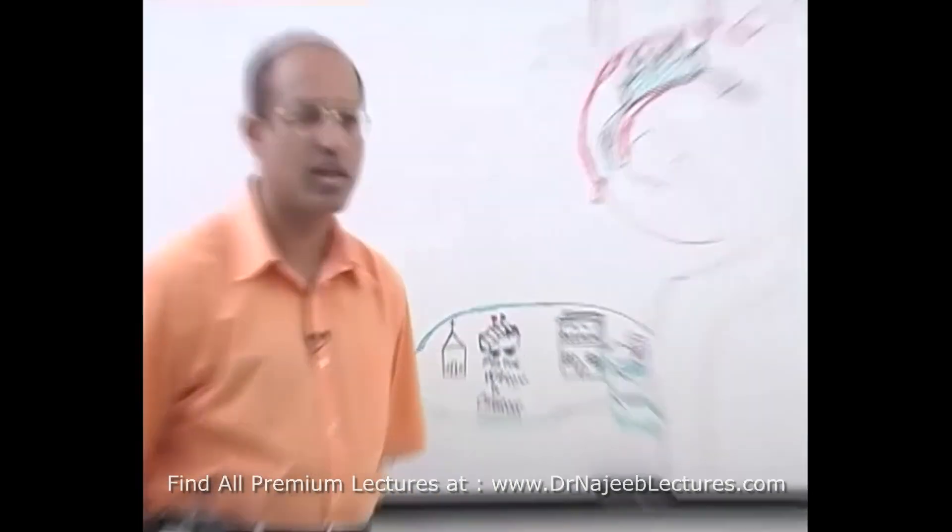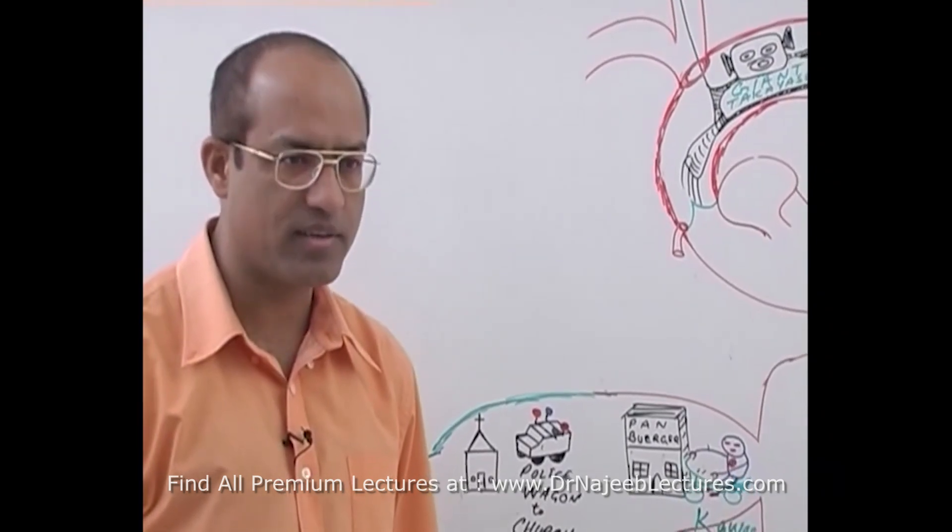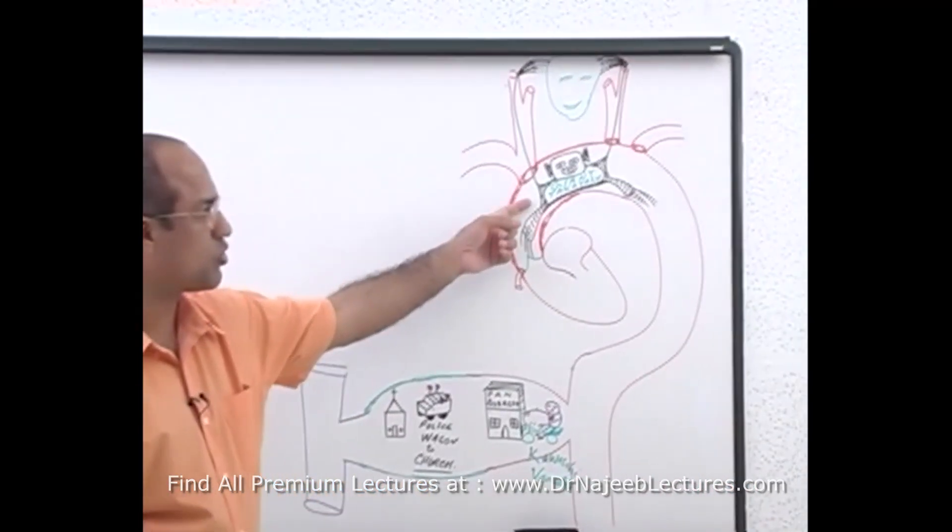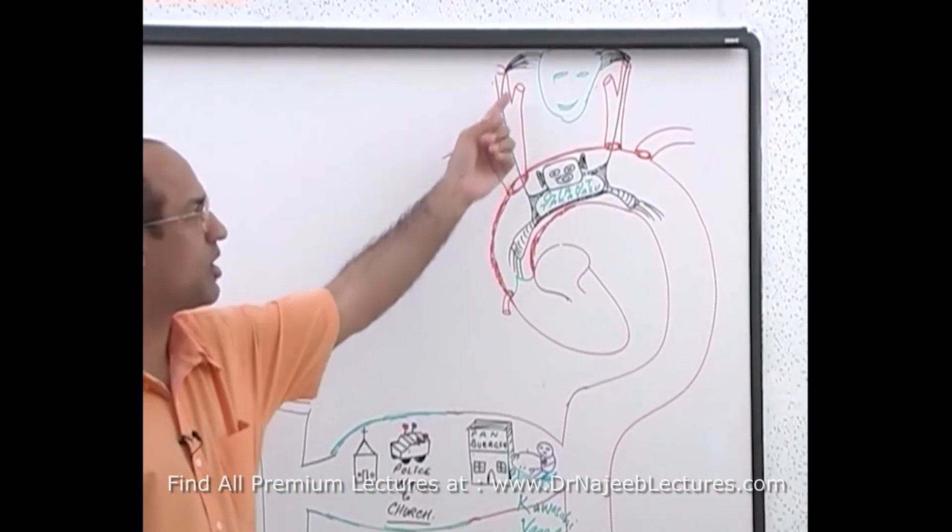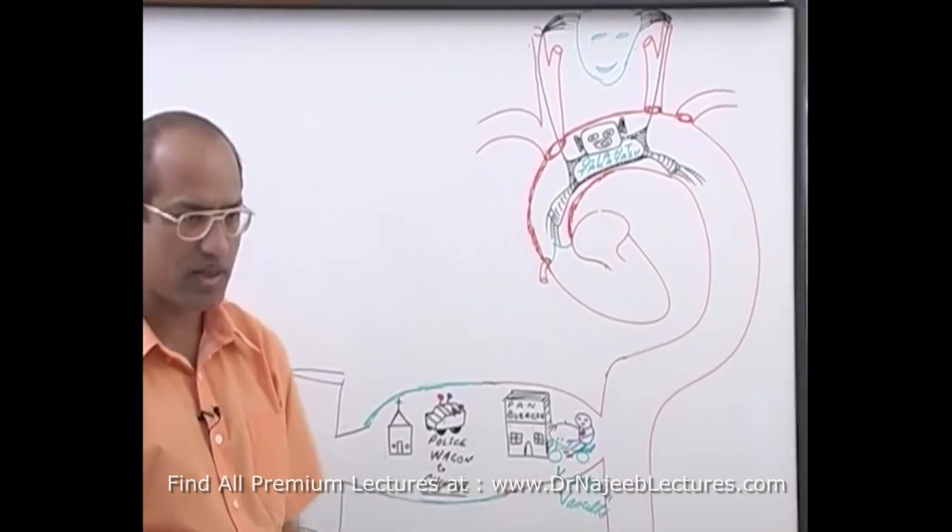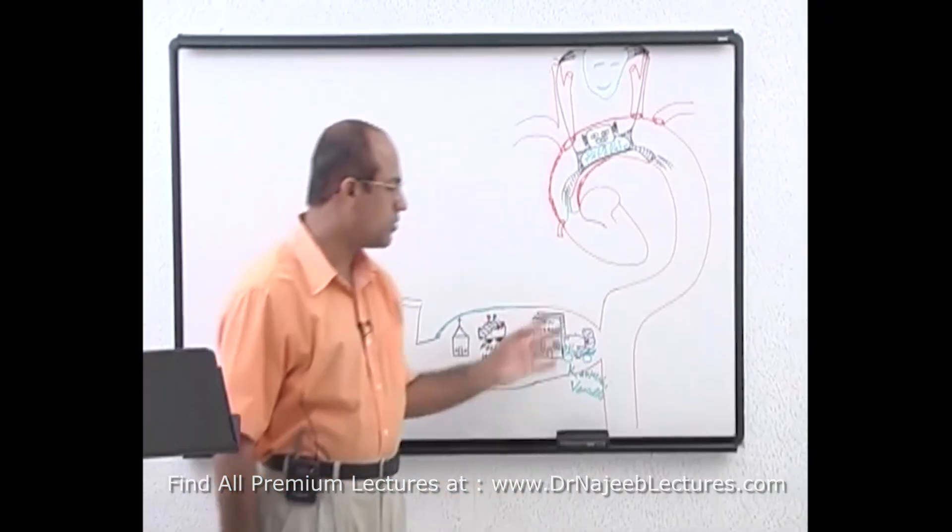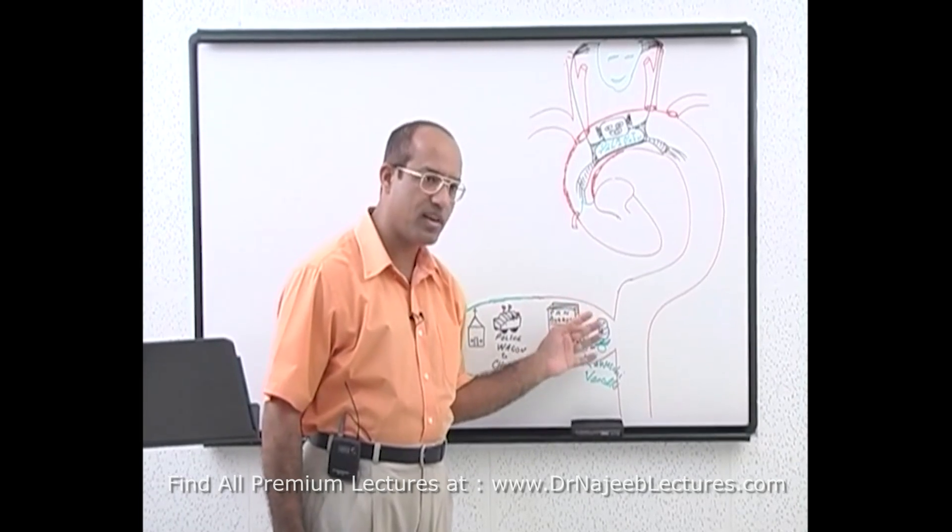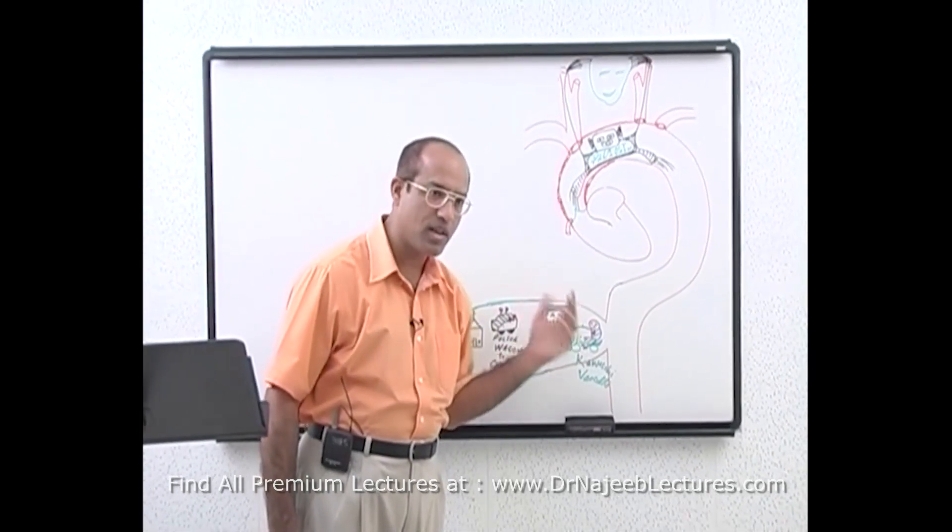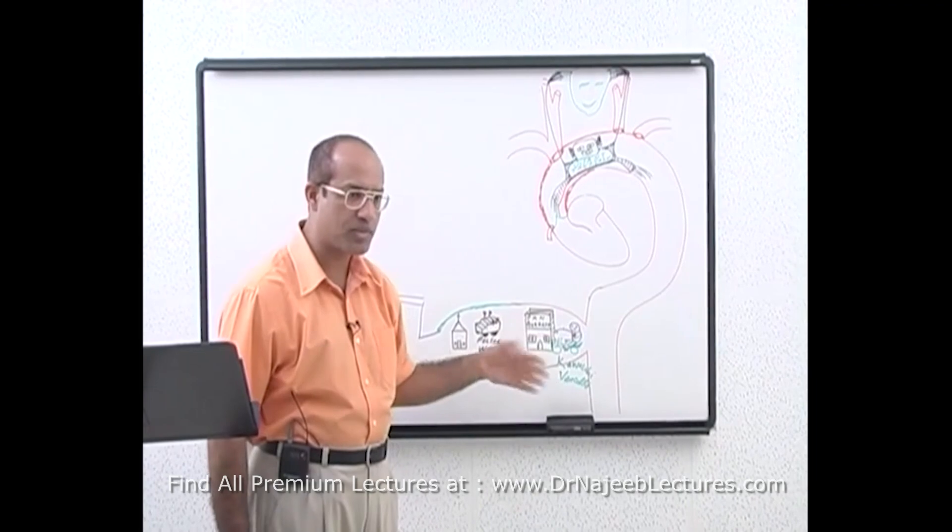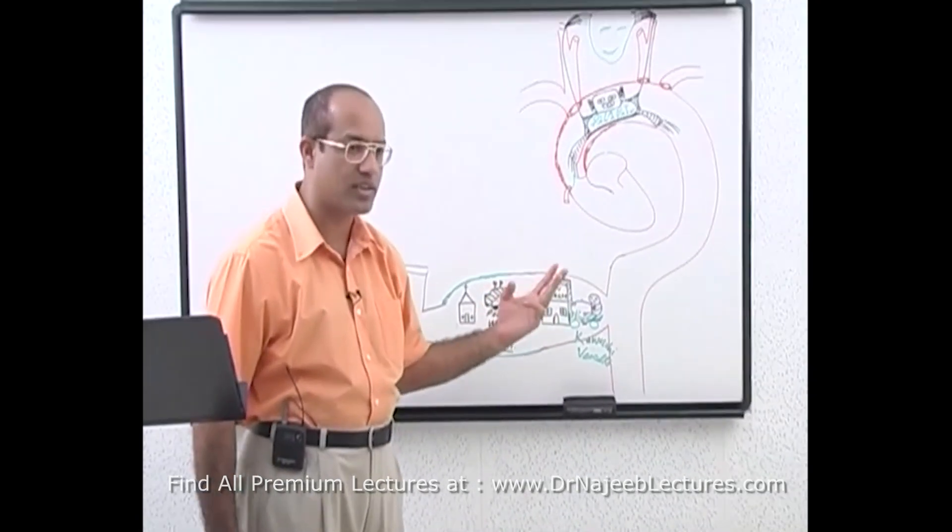Up to now we have discussed in detail large vessel vasculitis - that was Takayasu's vasculitis and temporal giant cell arteritis. Now we will talk about medium vessel vasculitis. Medium vessel vasculitis can be easily remembered. They are basically three categories.